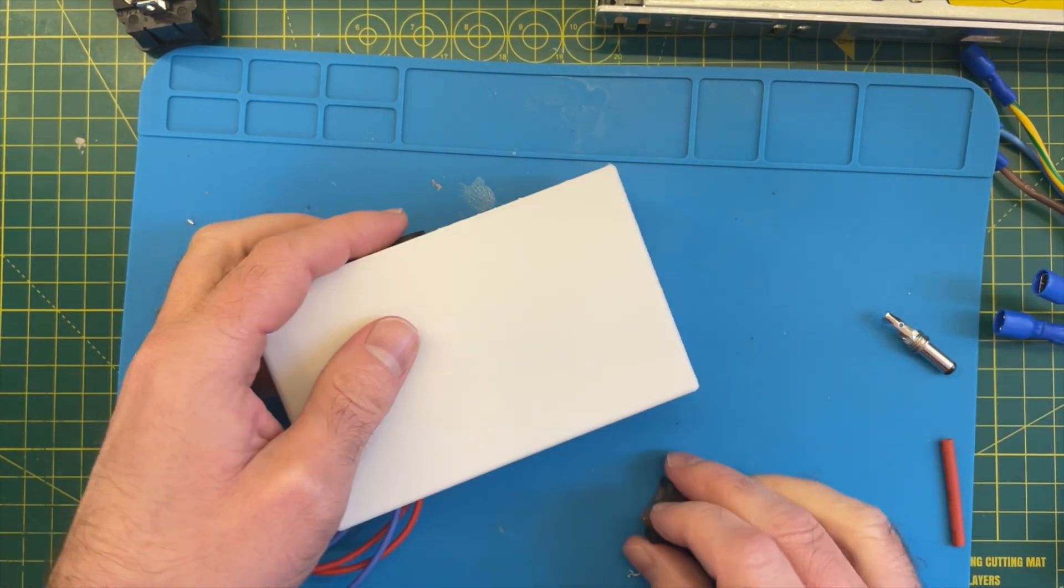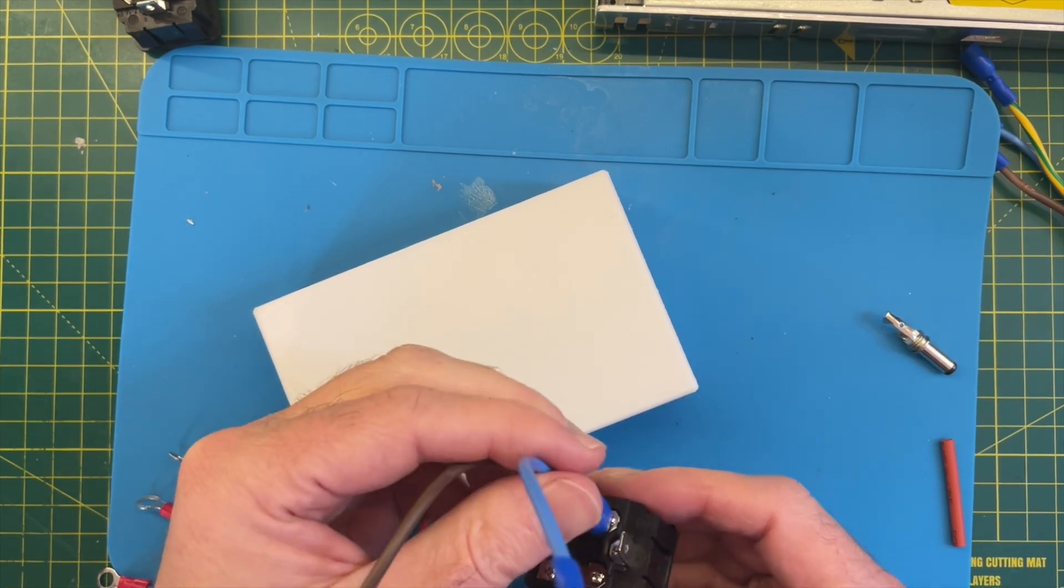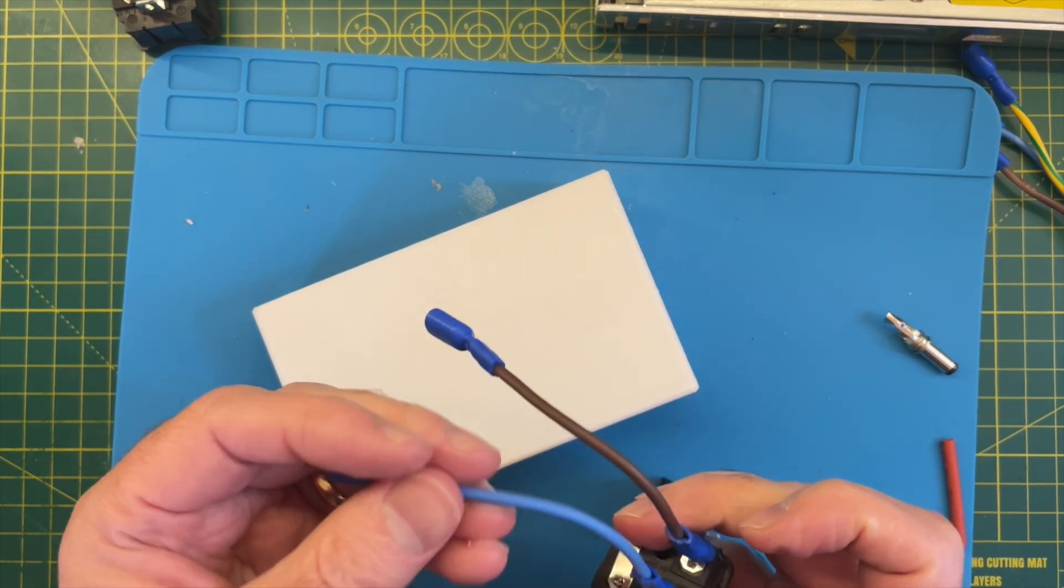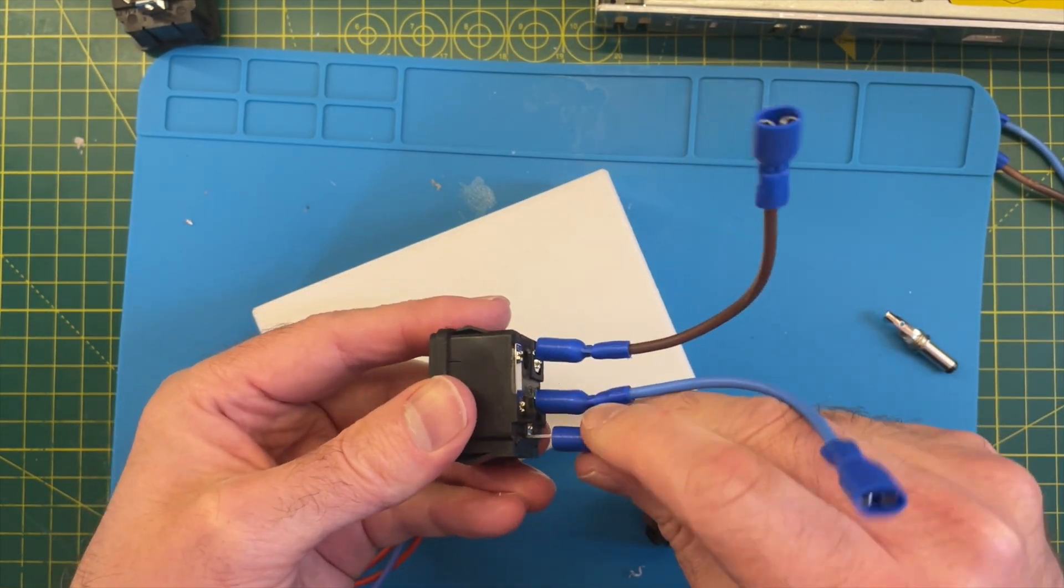So now we just need to get the switches and the socket wired up. We've already got the two loops for the live and the neutral, and let's put the earth wire on as well.